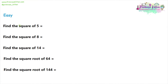So first, we're gonna find the square of five. This is written out in plain English, but you may also see it written like this: five to the power of two. Rather than writing 'square' with all those letters, you can just write a little two. What this means is that we have two fives, and they are being multiplied together. Five times five is 25, so the square of five is 25.